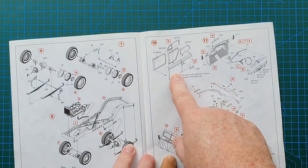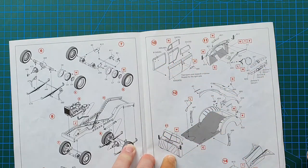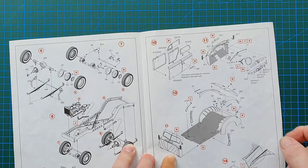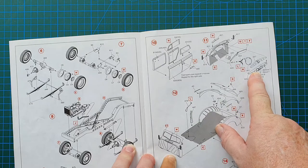And then doors. Doors also have an interior, of course, because this is an open car. You'll have to paint inside and outside.